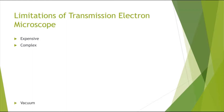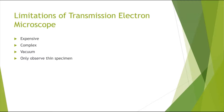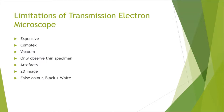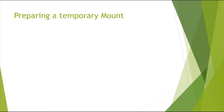Limitations of the transmission electron microscope: it is expensive and complex to use. Because it operates under a vacuum, you cannot observe living specimens. You can only observe thin specimens, unlike the SEM. It can also produce artifacts. Additionally, it gives a 2D image only and cannot produce a 3D image like the SEM. It also gives a false, black-and-white color image.